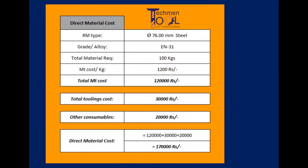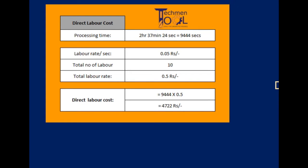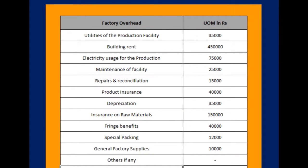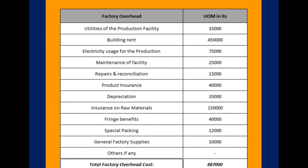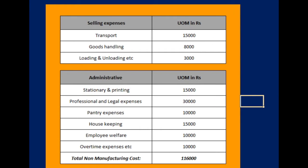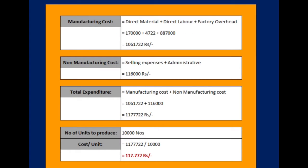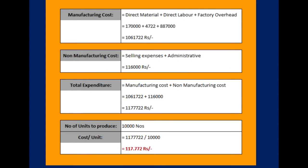The procedure for calculating direct material cost includes raw material cost, tooling cost, and consumables, with an example calculation shown. Direct labor cost is obtained by multiplying the labor rate by the processing time estimation of the job. Factory overhead includes factors like utilities of the production facility, building rent, electricity usage for production, etc. Non-manufacturing cost includes expenses like selling and administrative. So, manufacturing cost is the sum of direct material, direct labor, and factory overhead. Total expenditure is the sum of manufacturing cost and non-manufacturing cost. Dividing total expenditure by the number of units to produce gives the unit cost of the product.